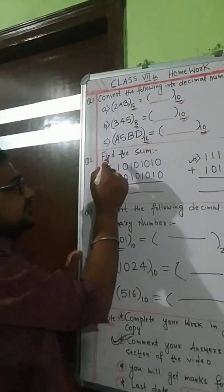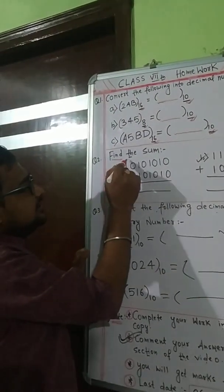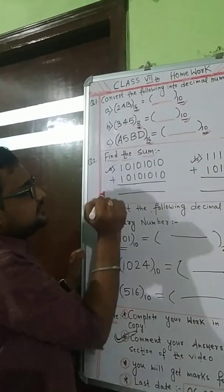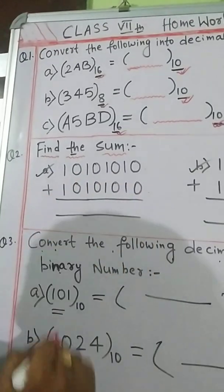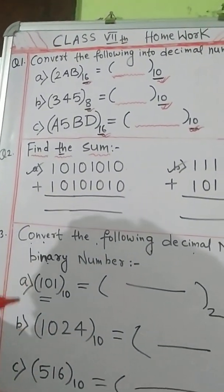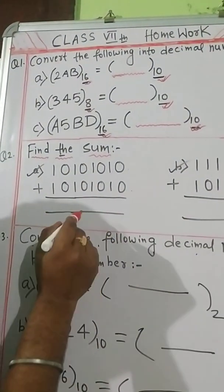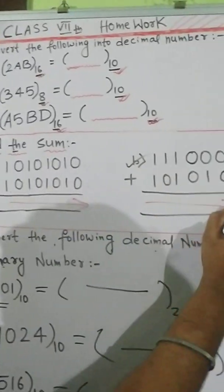The second question is you have to find the sum. You have to find the sum of this type of number. This is which type of number? This is binary number. So you have to find the sum of these all. You have to write your answer over here.